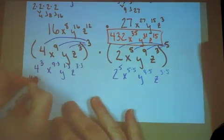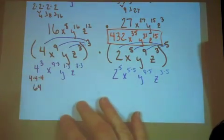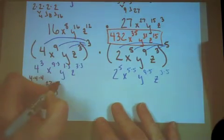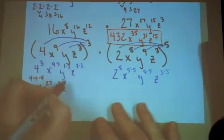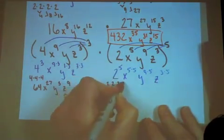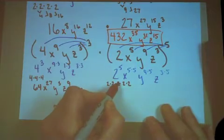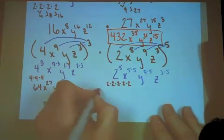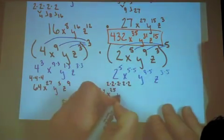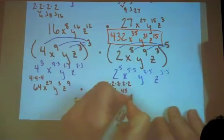4 cubed means 4 times 4 times 4. 4 times 4 is 16, times 4 is 64. x to the 9 times 3 is 27. y to the 1 times 3 is 3. z to the 3 times 3 is 9. times 2 to the 5th means 1, 2, 3, 4, 5, 2's all being multiplied. 2 times 2 is 4, times 2 is 8, times 2 is 16, times 2 is 32. x to the 5 times 5 is 25. y to the 9 times 5 is 45. z to the 3 times 5 is 15.